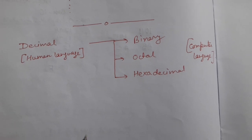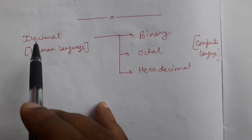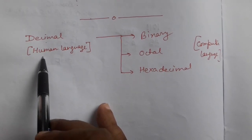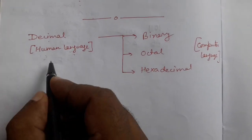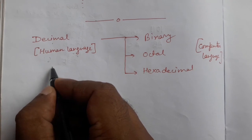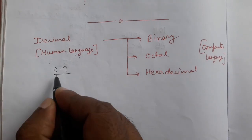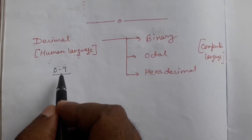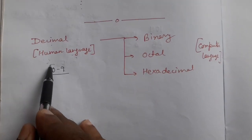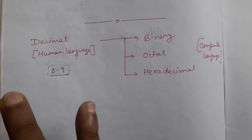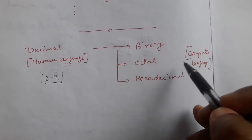So why do we need to know about number systems — decimal, binary, octal, and hexadecimal? Decimal number system is also known as the human number system or human language. Whatever number we create uses digits from 0 to 9. Except 0 to 9, we cannot create any number. And binary, octal, and hexadecimal number systems are known as computer language or the computer number system.